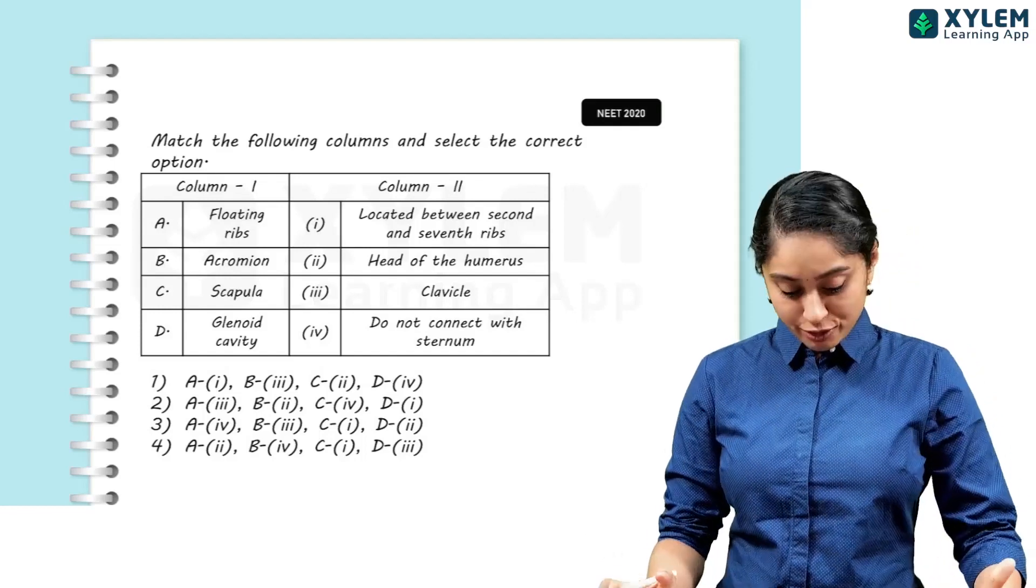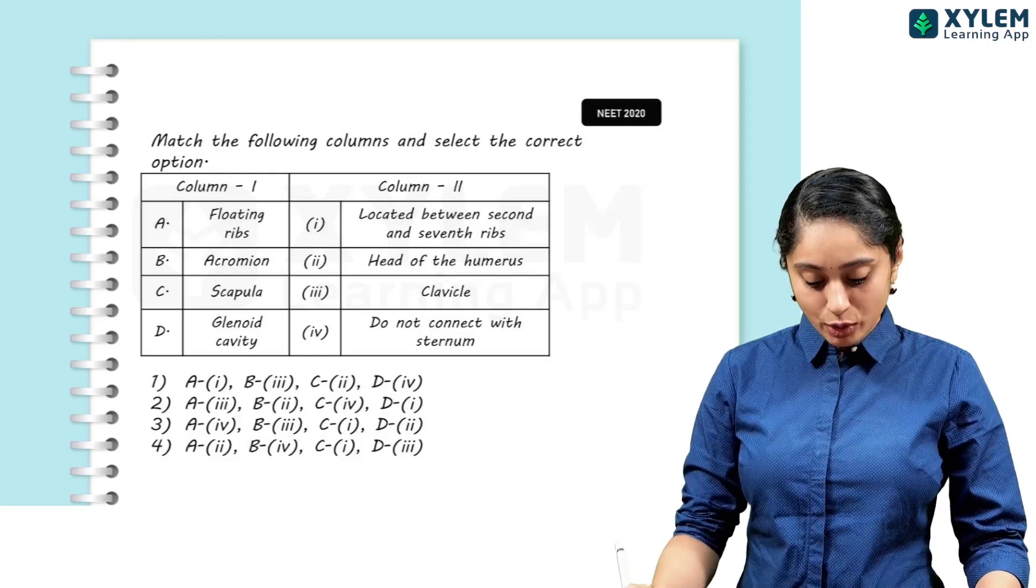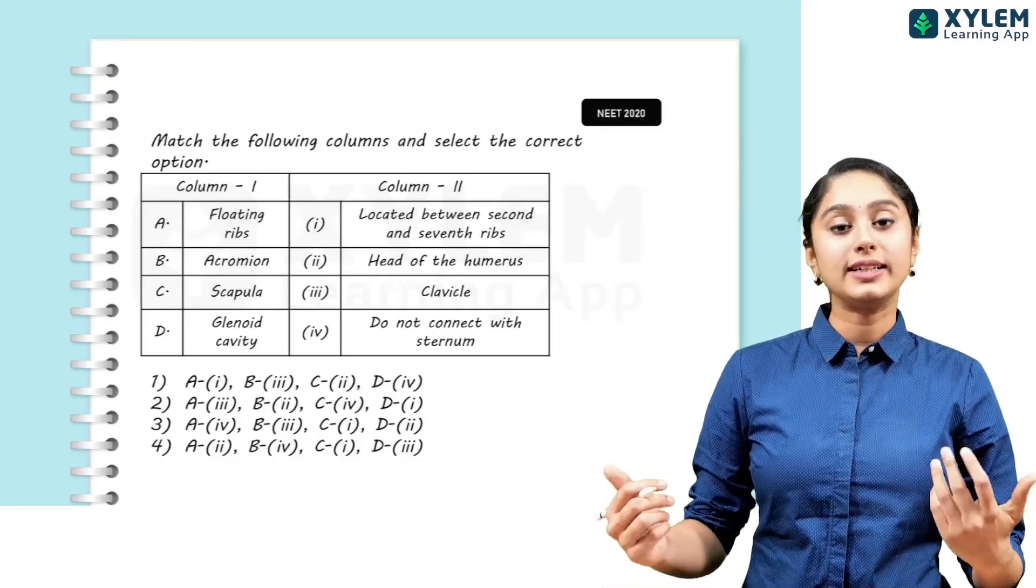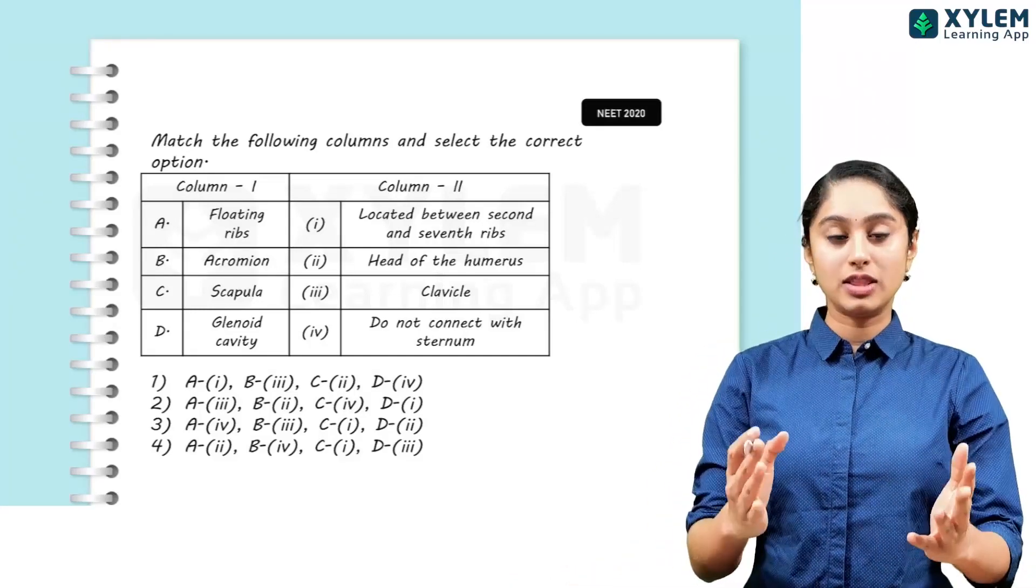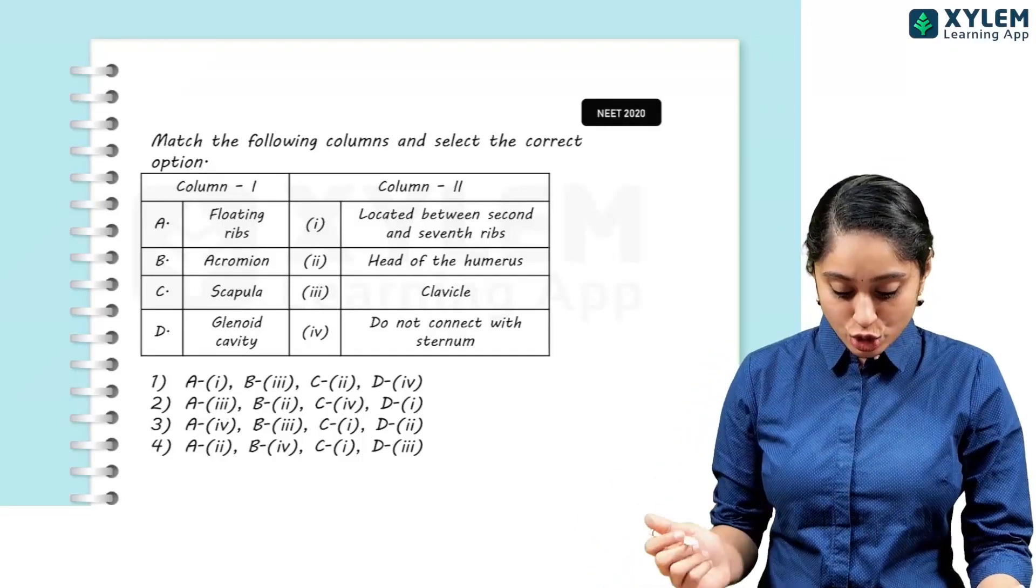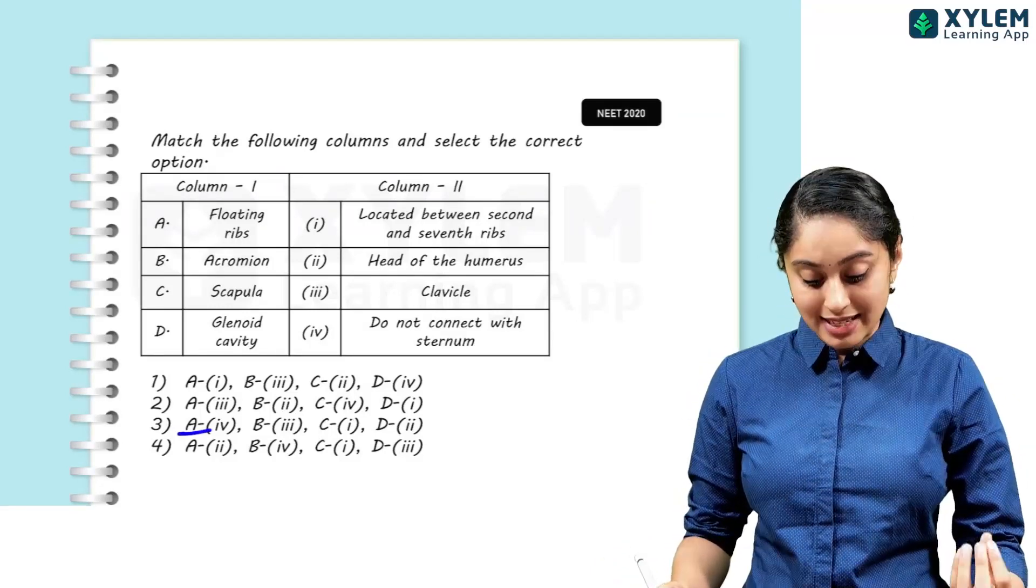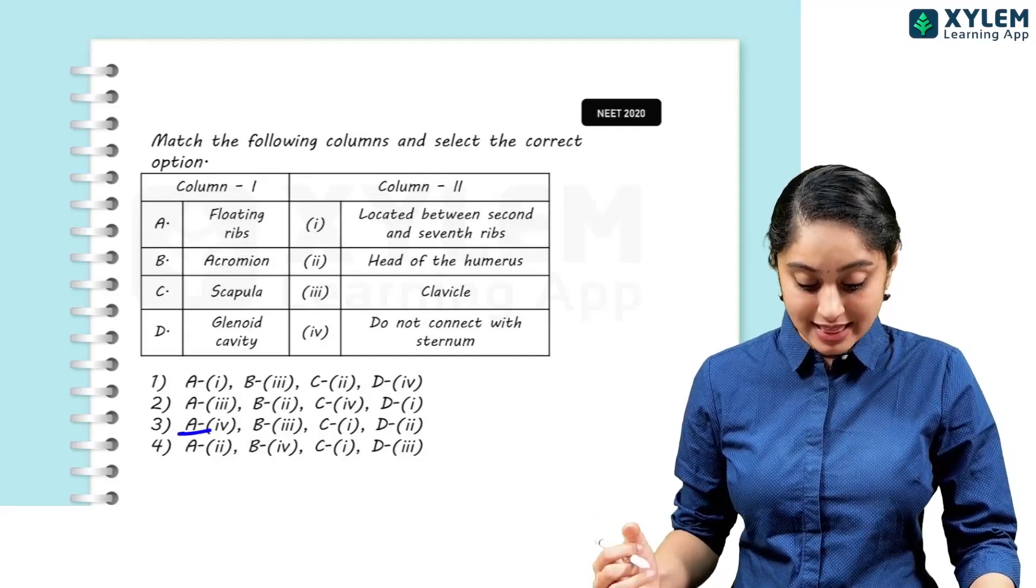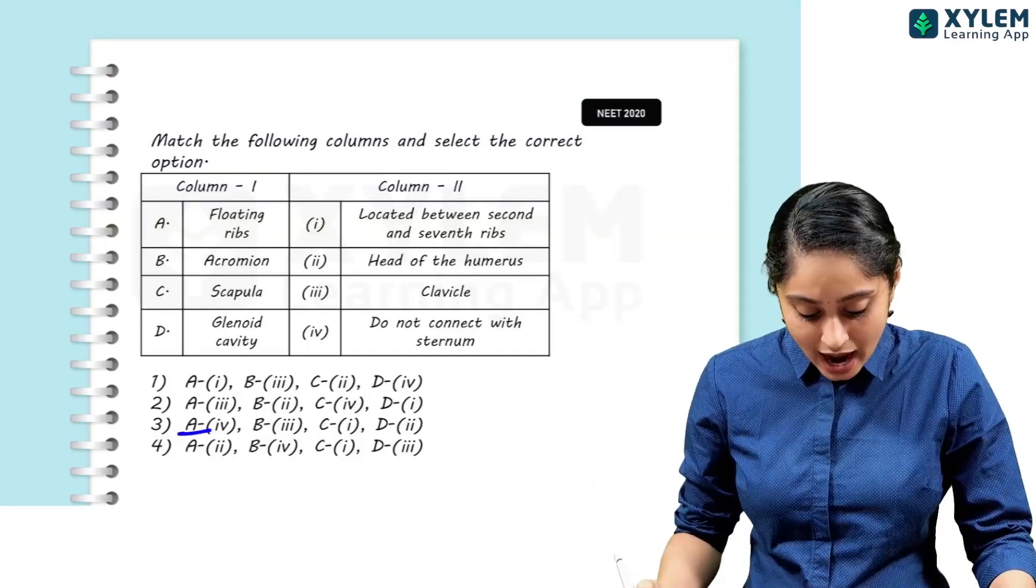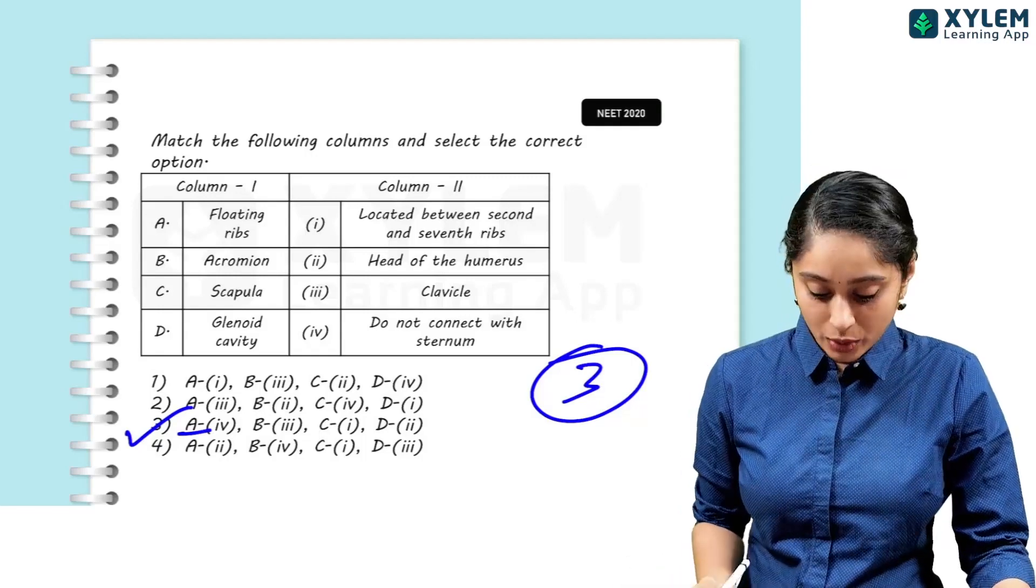2020 match the following question again. A floating ribs, B acromion, C scapula, D glenoid cavity. Now floating ribs, look at that, they are not connected to the sternum. The first 7 pairs are connected to the sternum. So we can map A to 4. The acromion is part of the clavicle. And then scapula is present between the 2nd and the 7th rib. And the glenoid cavity - if you look at the humerus head, we have glenoid cavity, that's where it basically attaches. So that's why A4, B3, C1 and D2. Option 3 will be the right answer.